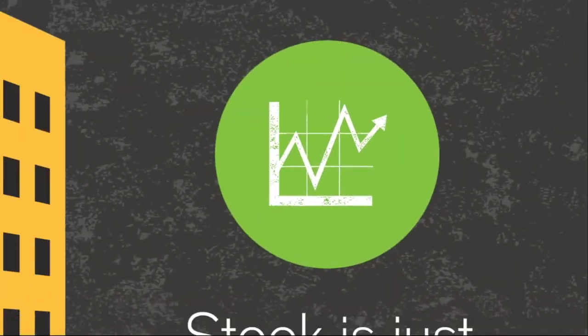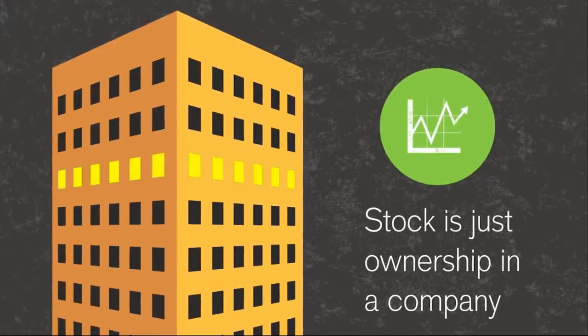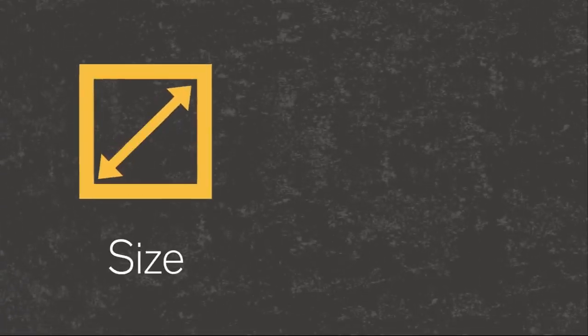Stock is just ownership in a company. There are many ways to classify stock. Two major ones are size, called market capitalization or cap, and company location. Each classification has its own typical level of risk.